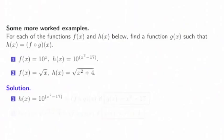Our solution: if h is 10 to the x squared minus 17 and we want it to be f composed with g of x, then make g be x squared minus 17. Verify that when we run x through g we get x squared minus 17, and then when we run it through f, we put that x squared minus 17 into the exponent position.